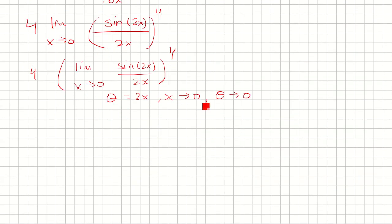So we have 4 times the limit as theta approaches 0, sine theta over theta, and then all raised to the fourth power. We know that sine theta over theta goes to 1. So we have 4 times 1 to the fourth, and we have 4 as our limit.